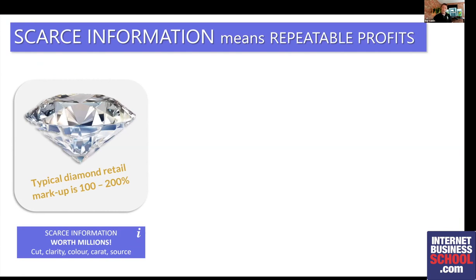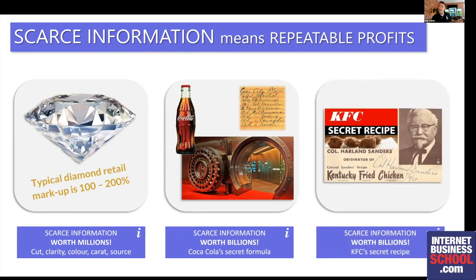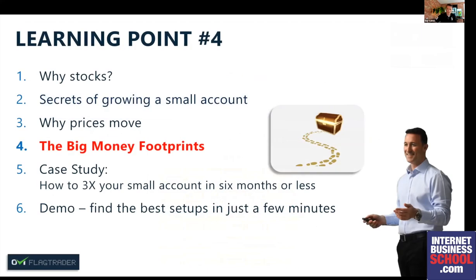If you were a diamond dealer, your specific knowledge of cut, clarity, color, and source would put you at an advantage over the man on the street — that's why diamonds retail at 100–200% more than the dealer paid. Coca-Cola's secret formula, held in a secret vault, has made it a multi-billion dollar corporation. KFC has a secret recipe. These companies all have scarce information — and what they do with it is rinse and repeat, over and over again. Scarce information means repeatable profits. We want to be the diamond dealer of the stock market.